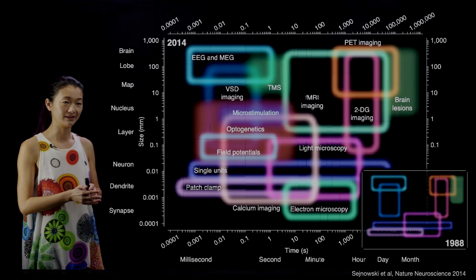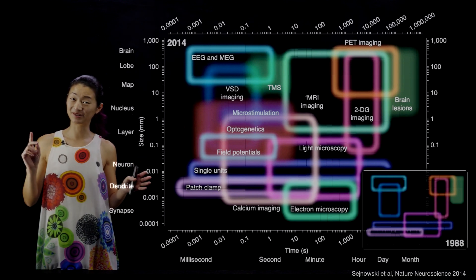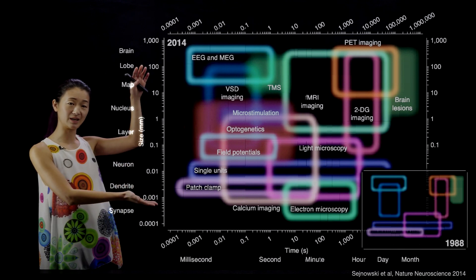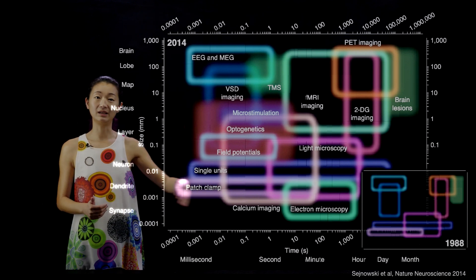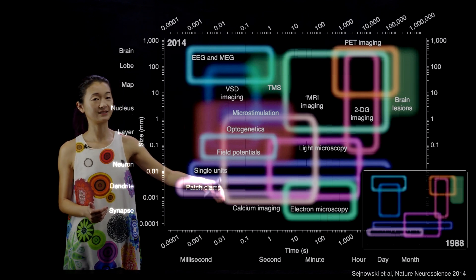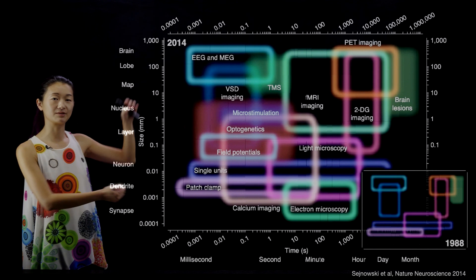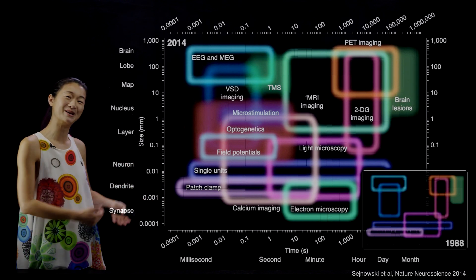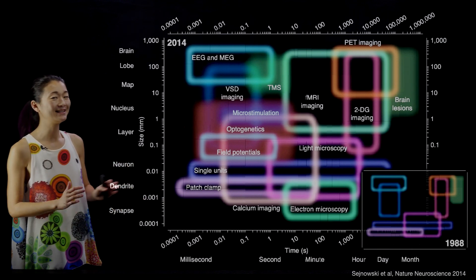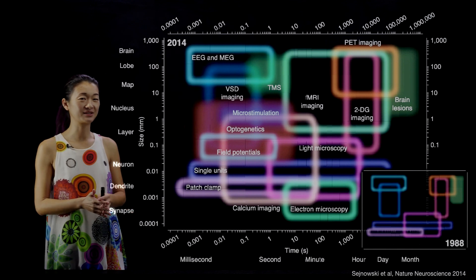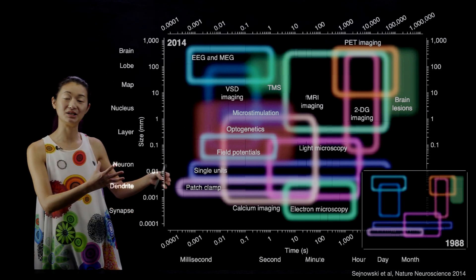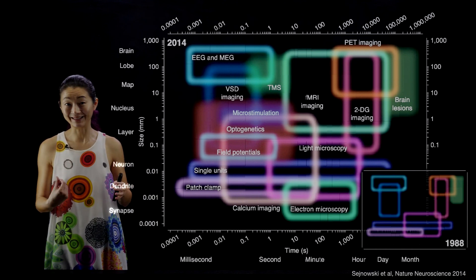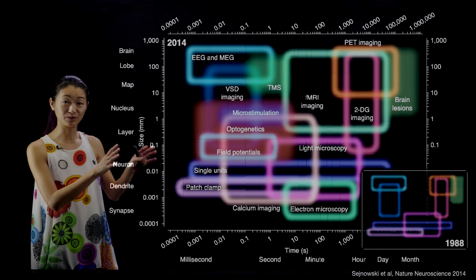This is a diagram from a review paper that Terry Sejnowski wrote with colleagues. The axes should be familiar: the horizontal axis shows temporal time scales in logarithmic coordinates, where every tick mark is 10 times longer, and the vertical axis shows size scales, also logarithmic, where every tick mark up is 10 times larger. In this diagram, the authors highlighted the technologies available for monitoring as well as manipulating neural activity at those spatial and temporal scales.